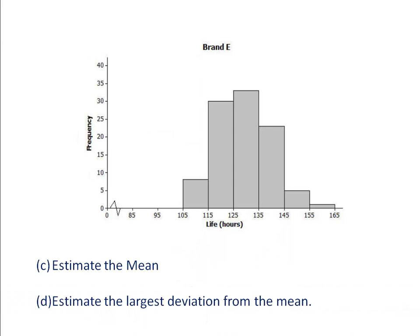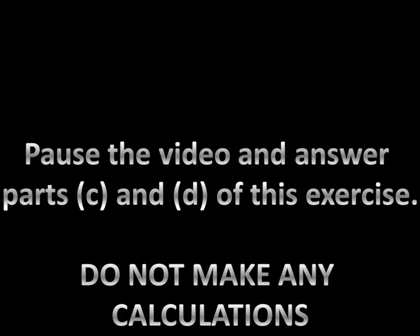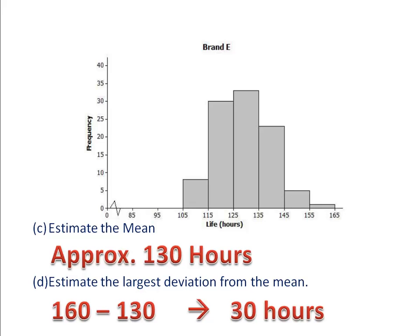The results for brand E are displayed in the second histogram. We want to estimate the mean and then estimate the largest deviation from the mean. Please pause the video here and try parts C and D — everything should be an estimate, no calculations needed. We find that the mean is approximately 130 hours, the balancing point of the histogram. The largest value is somewhere between 155 and 165, so we estimate 160. Subtracting 160 minus 130, the largest deviation is approximately 30 hours.